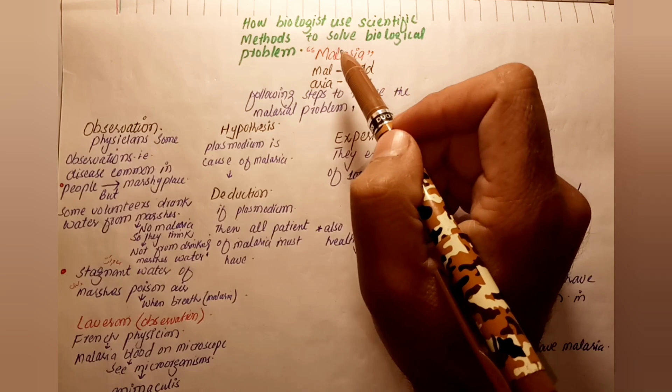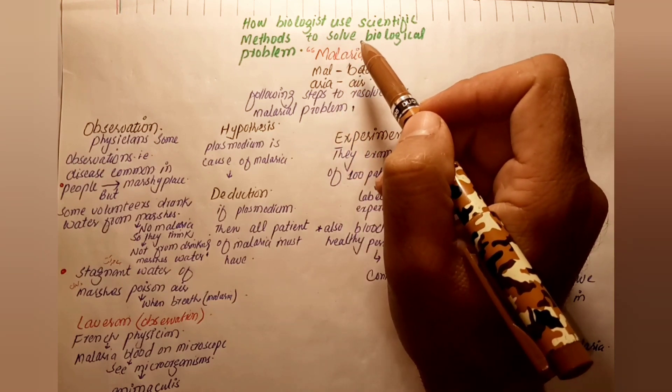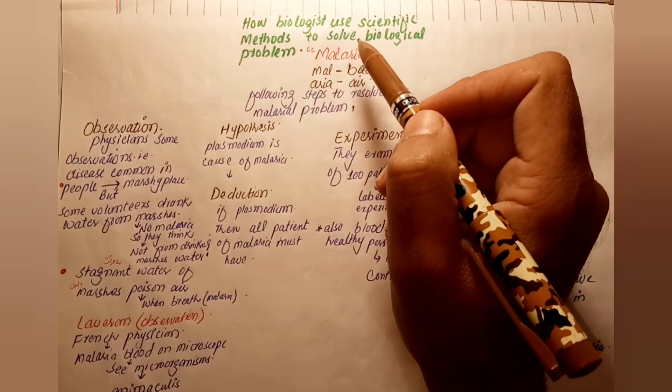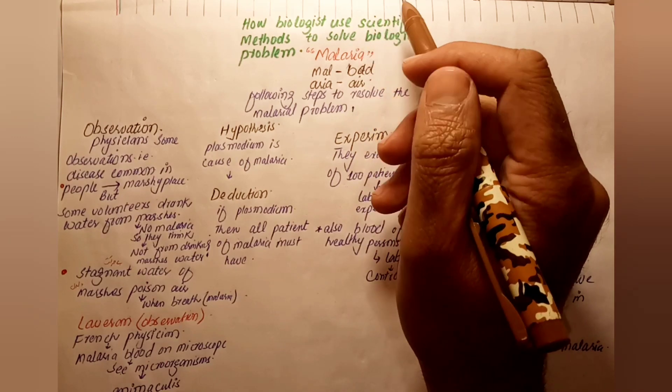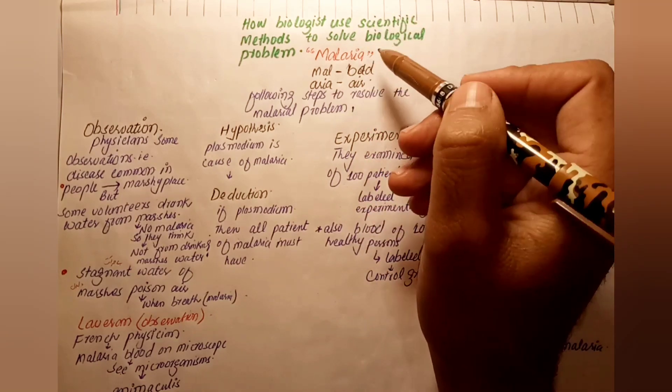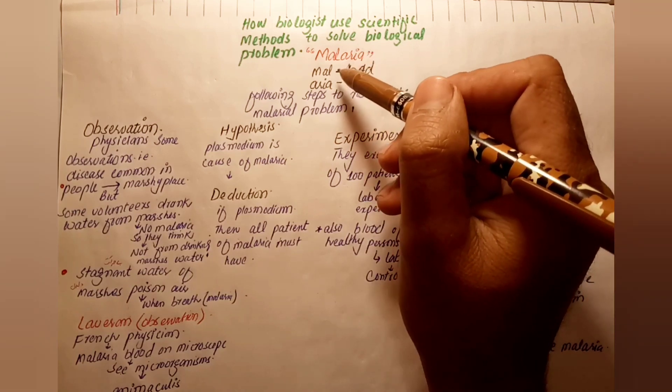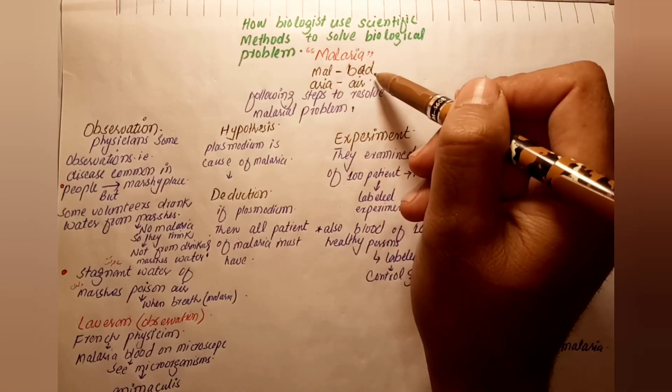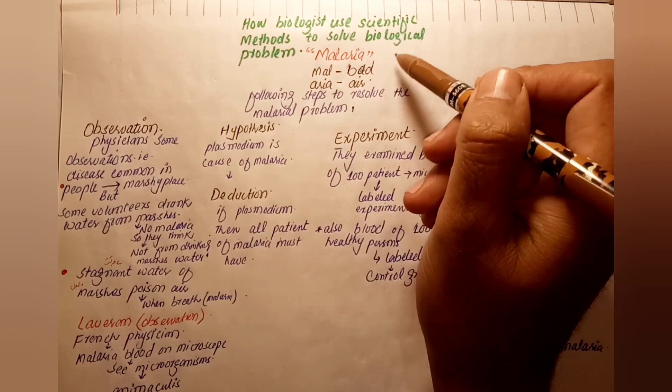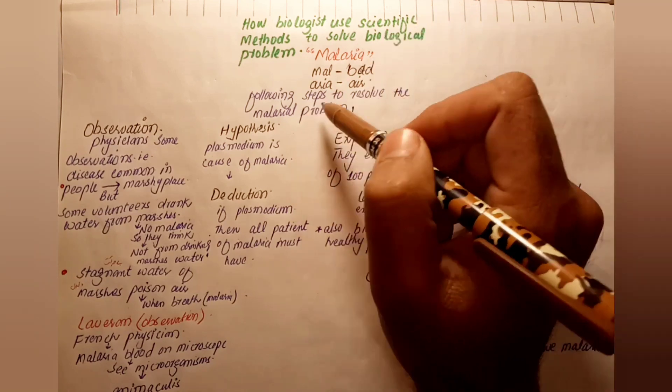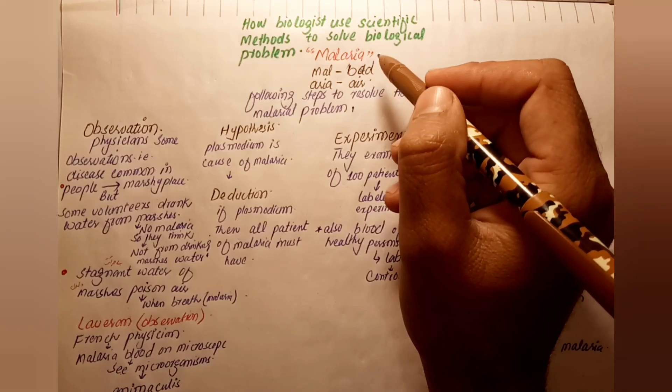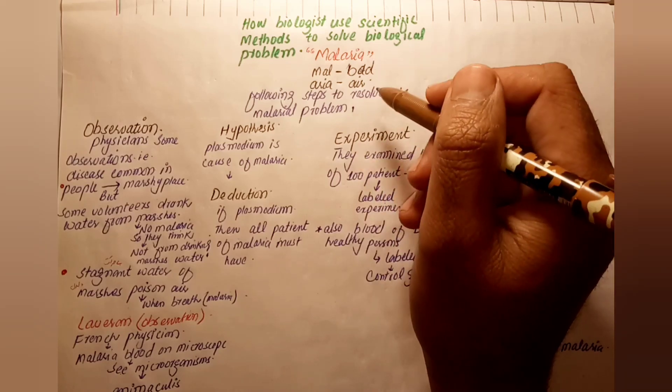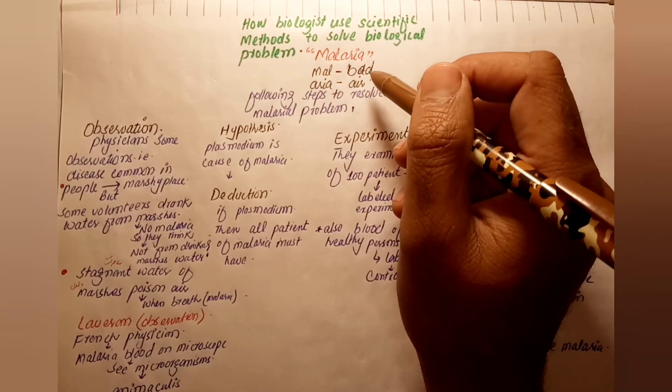Biological problems can be solved by biologists using scientific methods. For example, malaria. Malaria comes from two words: mal, meaning bad, and aria, meaning air - bad air. We are following steps to resolve the malarial problem using specific scientific steps.